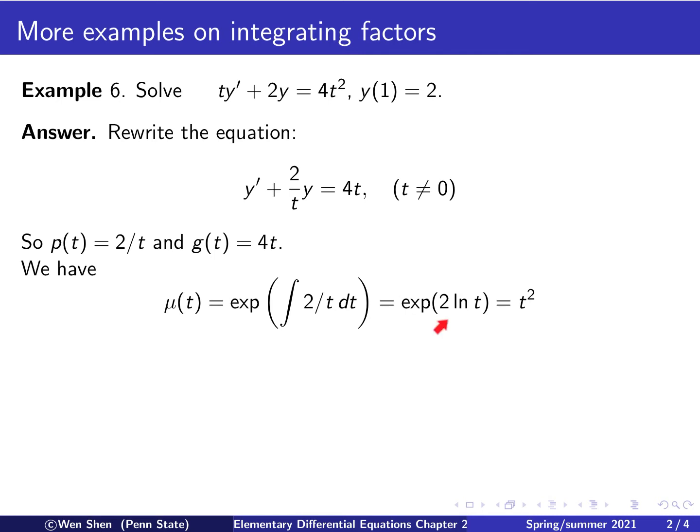And here we play the standard trick. We move the number 2 inside the natural log to have ln of t squared. Then the exponential function and the natural log are inverse functions of each other, so they cancel, and we get simply t squared.